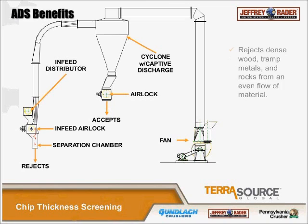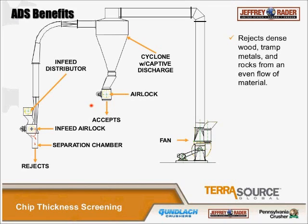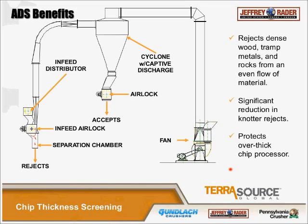The advantage of the ADS is it rejects dense wood, tramp metals, and rocks from the flow of chips. The major benefit is the reduction in reject knots — taking knots out of the chip flow helps the process. The ADS system also protects the overthick chip processor before the chip conditioners. When we used to use chip slicers, it was very important to protect that equipment because if a rock dropped through it, the damage could be catastrophic.